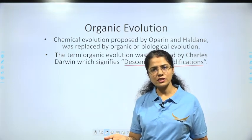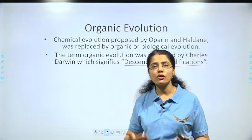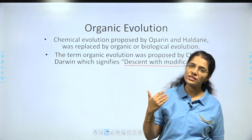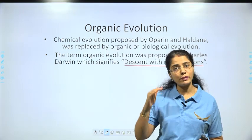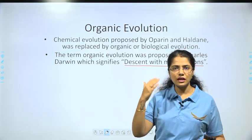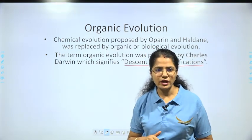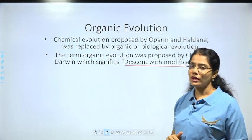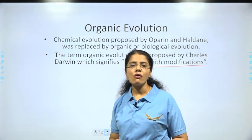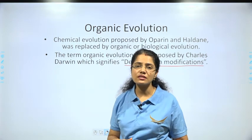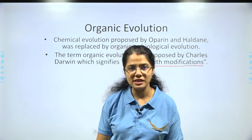The generation after us are called our descendants (hamare baad wali generation hamare descendants hai). The generation before us — parents, grandparents — are our ancestors. Now, we need to understand that all existing life forms share similarities and share some common ancestors.